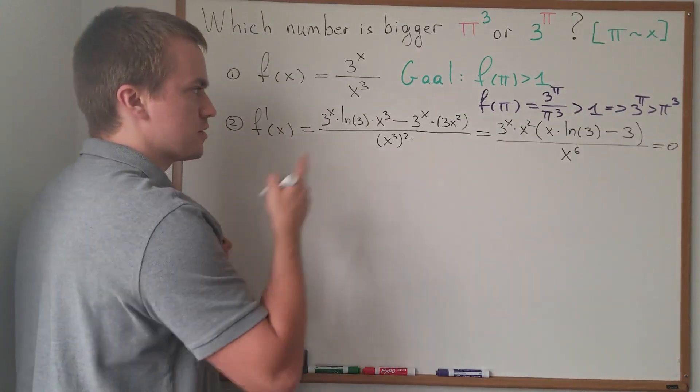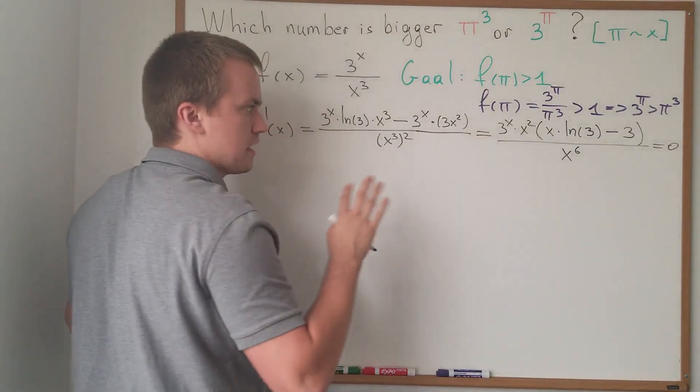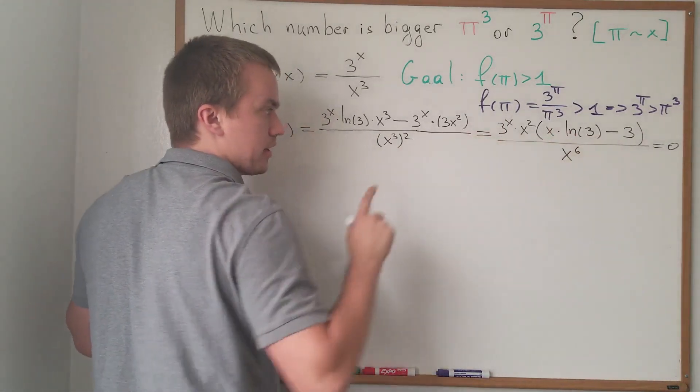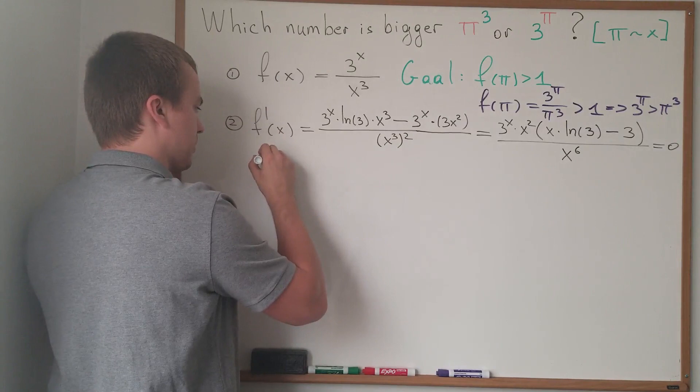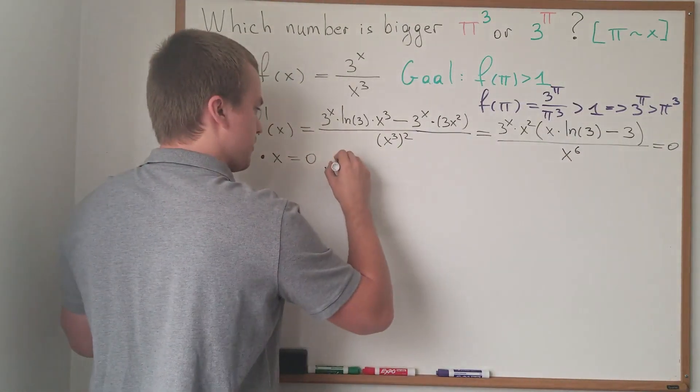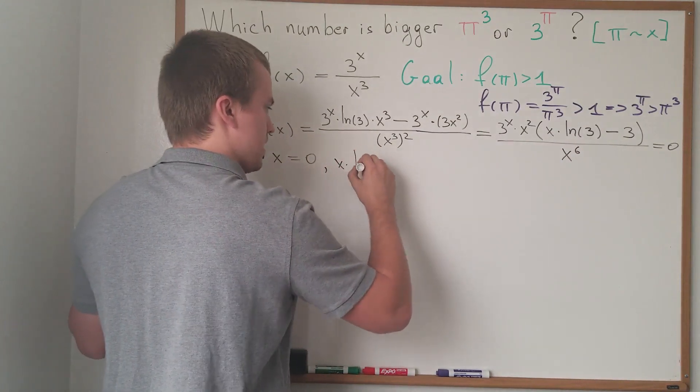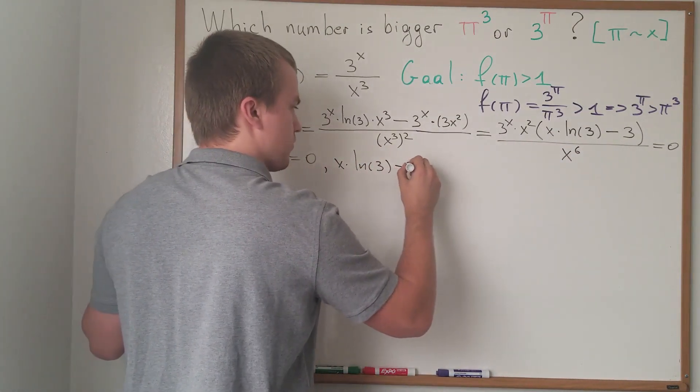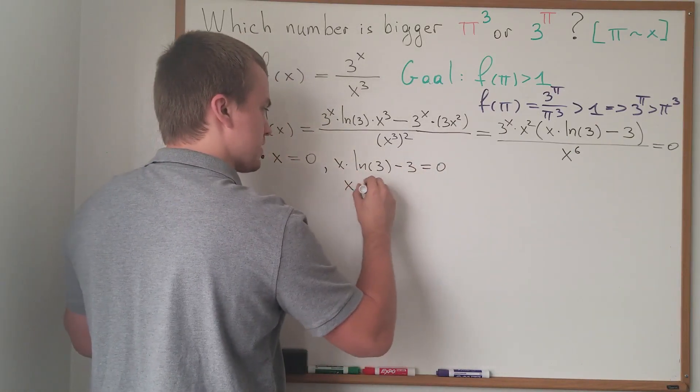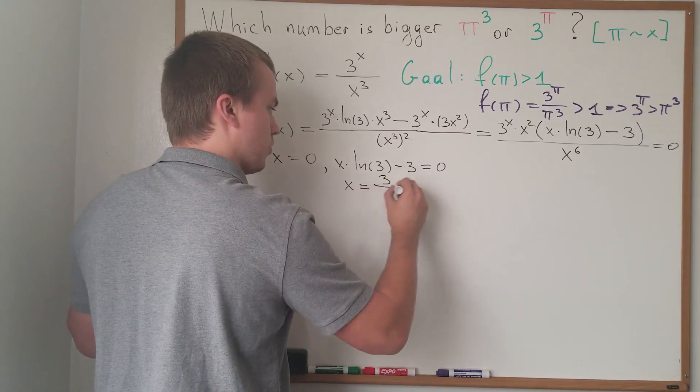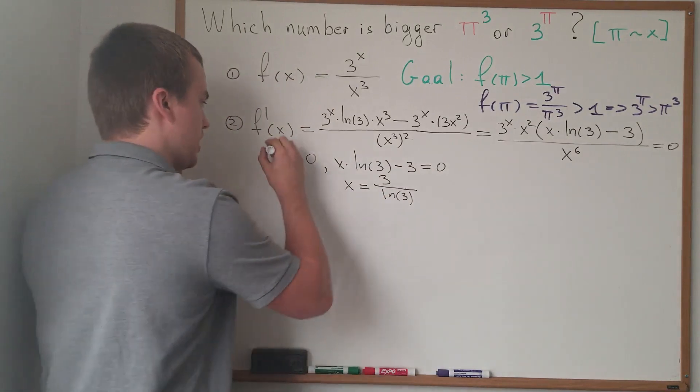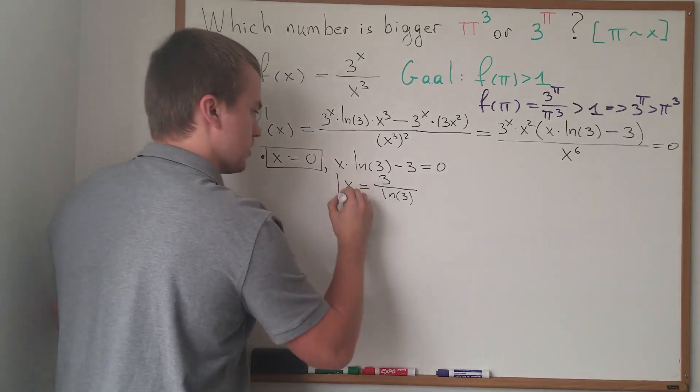And we can see from this expression that 3 to the x is never 0. So, this term doesn't give us any critical points. x squared equals to 0, I'm going to get my first critical point, x equals to 0. And for my second expression, we'll have x times ln(3) minus 3 equals to 0. So, from here, I will get that my second critical point is x equals 3 over ln(3). So, we got our two critical points. First one and second one.